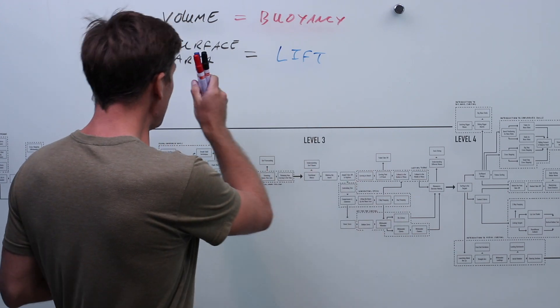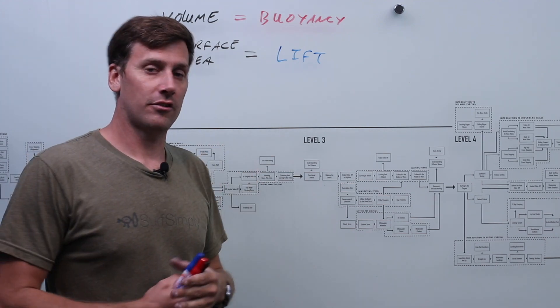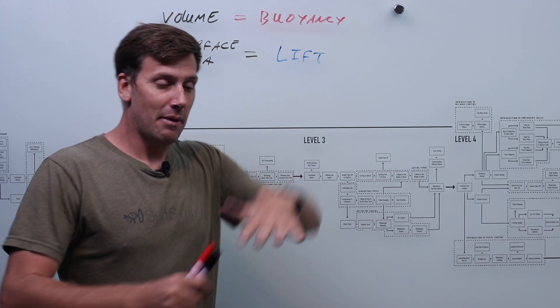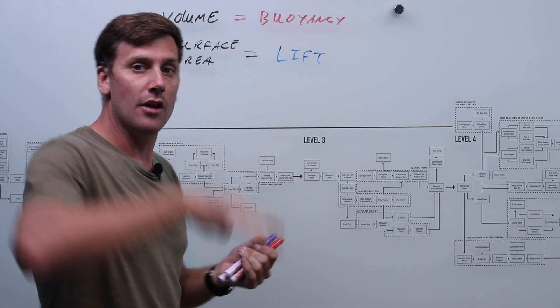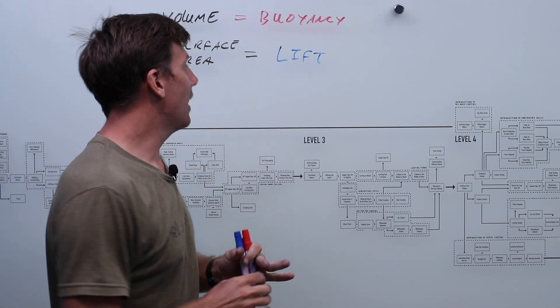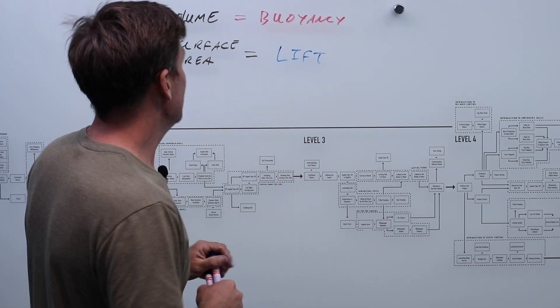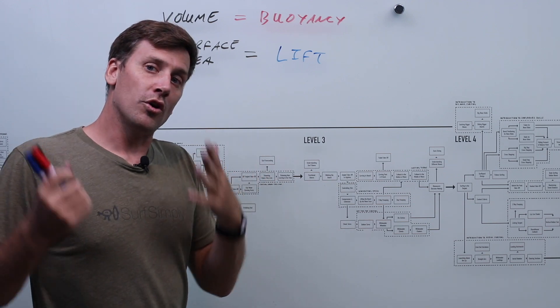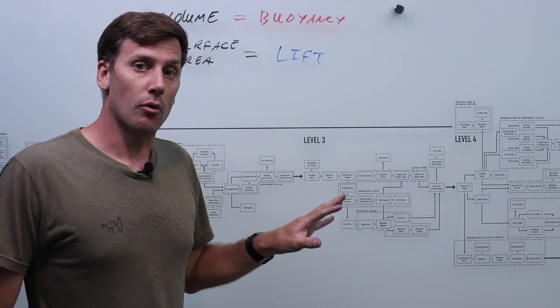Now lift is a dynamic force. Okay. And it changes based on lots and lots of parameters based on our speed, based on the angle of attack. Okay. As the board moves, nose up, nose down, rolls from rail to rail, the amount of lift is going to be changing. Okay. Now what you can probably see from this, the quick answer is surface area is more important. Okay.